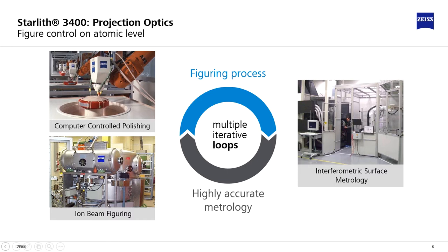Computer-controlled figuring technologies are used for figure correction. Based on the error maps from the full aperture interferometers, they shape the surface locally. Various technologies, as for example computer-controlled polishing and ion beam figuring, can be used here.